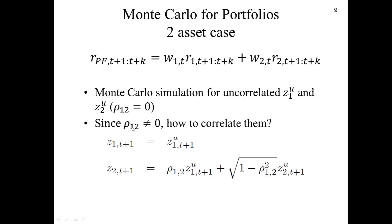However, the correlation between security 1 and 2 is not zero. So the question is how do we correlate z1 and z2? We use the uncorrelated versions z1u and z2u, where z1 equals z1u, and z2 is a function of the correlation ρ(1,2), z1u (the uncorrelated one), and z2u. This formula produces two sets of random numbers z1 and z2 that have correlation ρ(1,2).